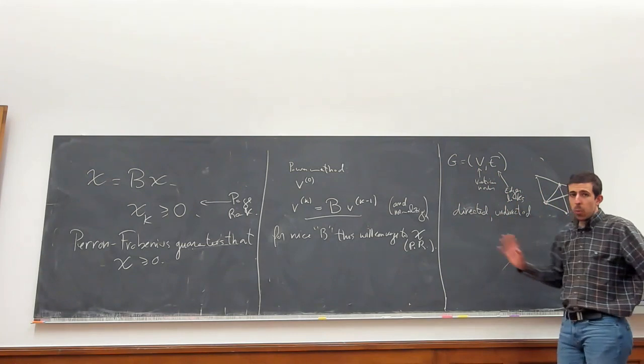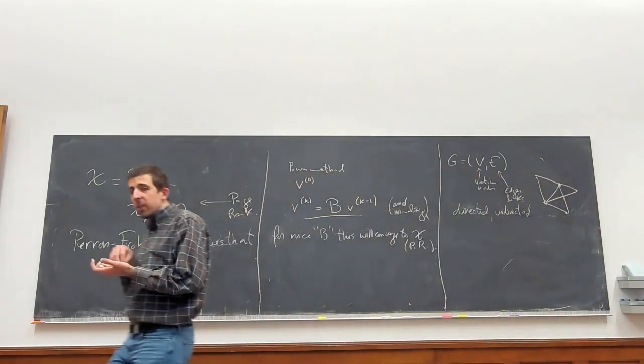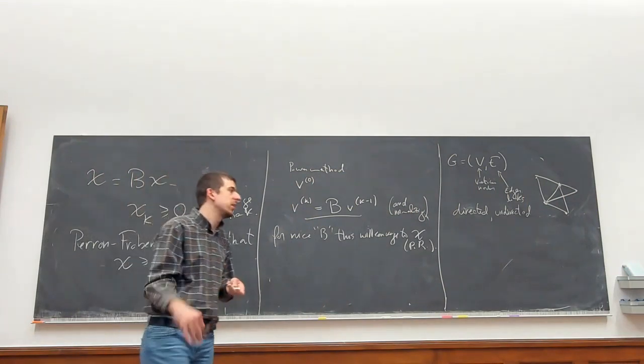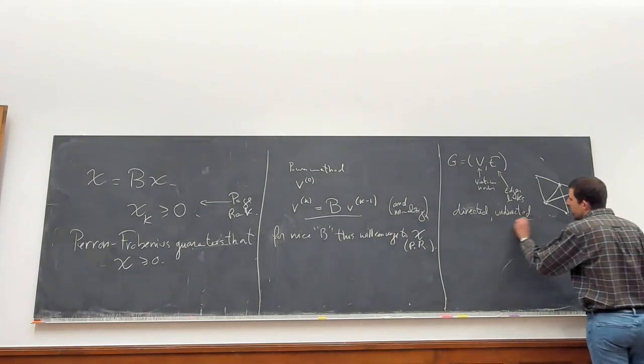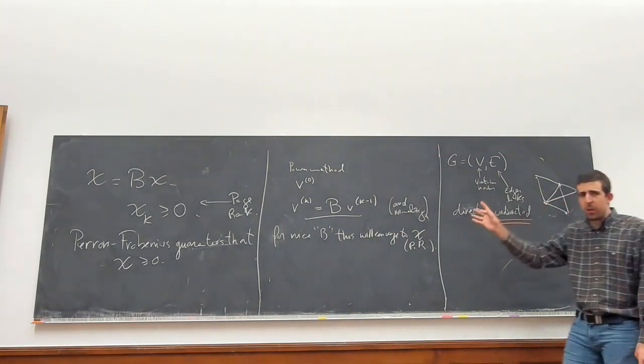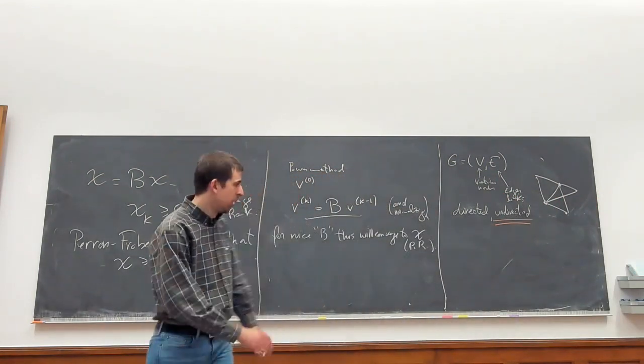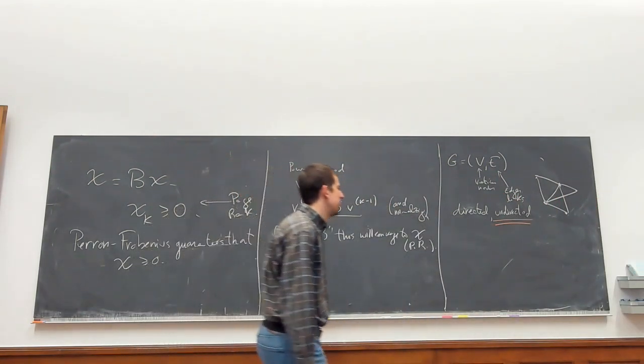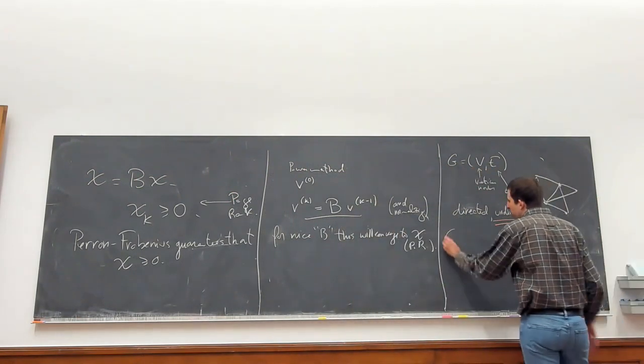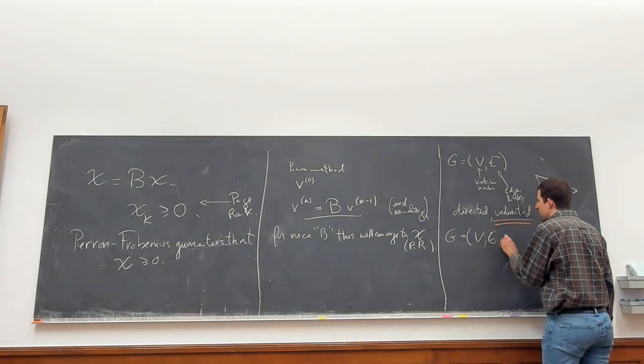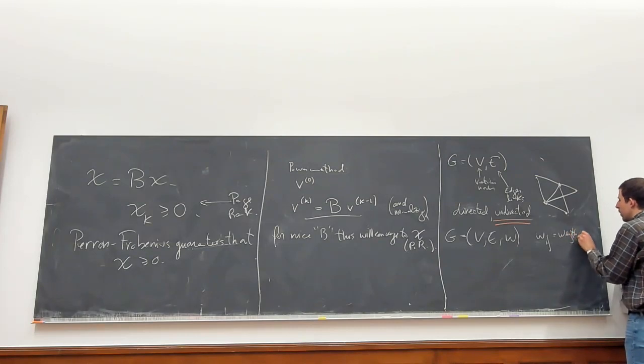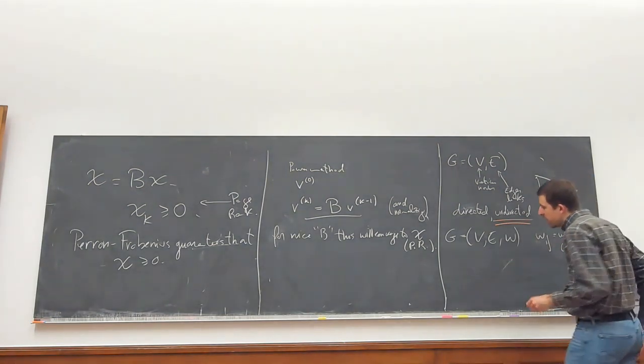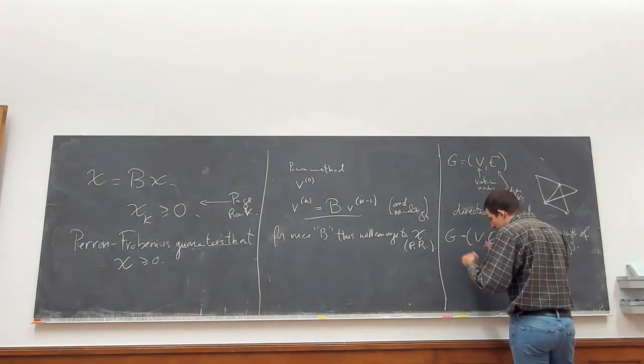So the web, the PageRank in the web is a directed graph. Just because page i has a link to page j does not mean that page j links back. So this was directed. But actually most of what we're going to deal with in the course are undirected. This was one of the very few instances in which we talked about directed graphs. Most of the time we'll talk about undirected graphs. And then the graph might have weights, where W_{ij} is maybe the weight of edge ij. You could have weights.